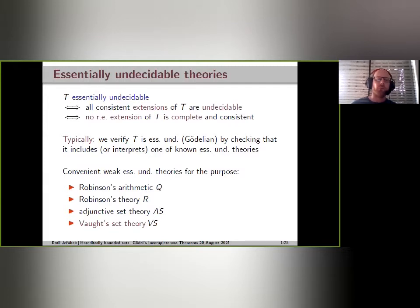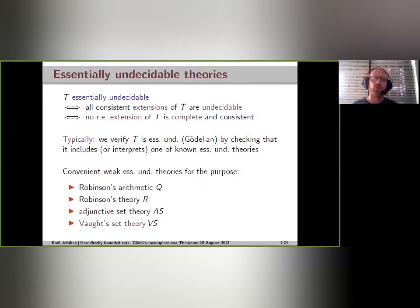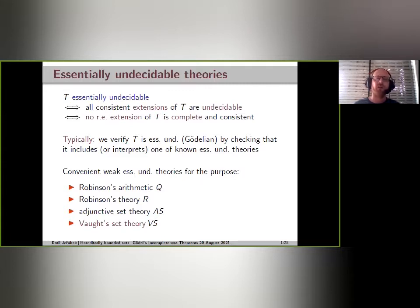Typical theories used for this purpose are Robinson's arithmetic, either the arithmetic Q or the weaker Robinson's arithmetic R, which is weaker than Q but on the other hand is not finitely axiomatizable, so it depends on the circumstances whether it is actually easier to use or not.